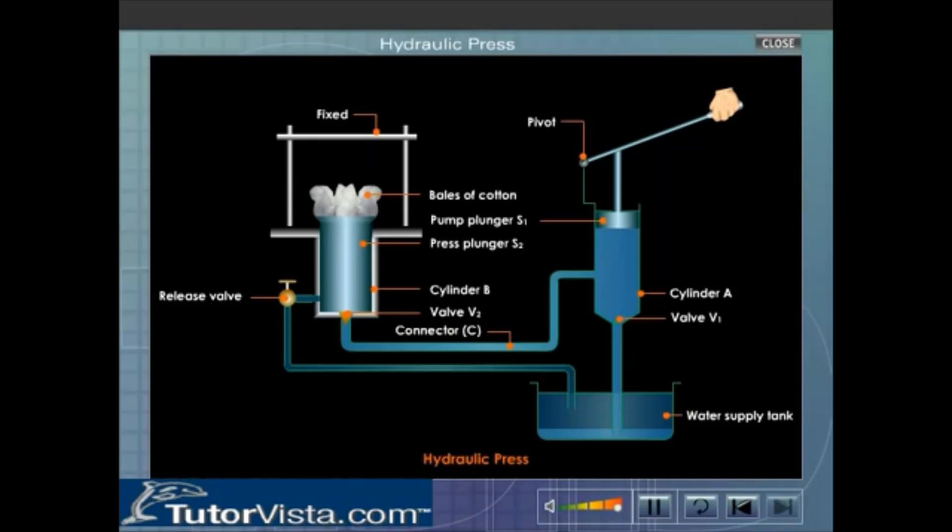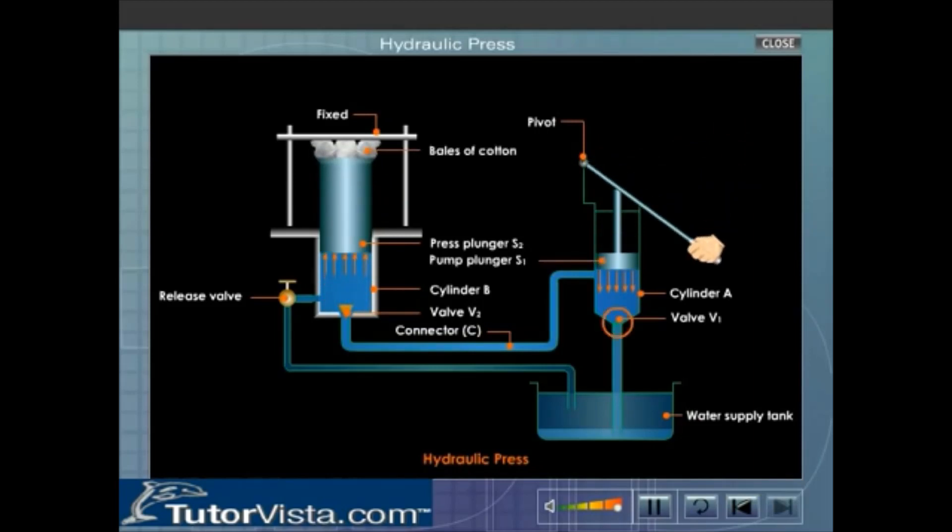When the pump plunger S1 is pushed downwards by lowering the lever handle, the valve V1 closes due to increase in pressure in cylinder A. As a result, water from cylinder A flows to the connecting tube C. The pressure in C is greater than that in cylinder B and therefore the valve V2 opens.